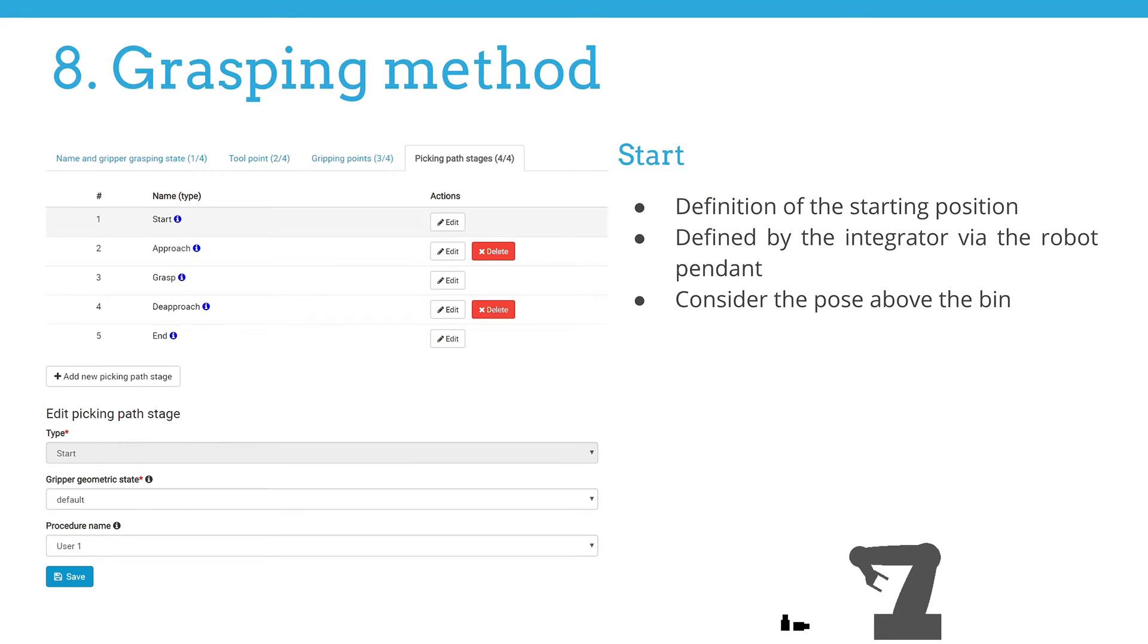The first action in the grasping stage is start. This step is mandatory. As you see from the name, this type defines the position from which the trajectory planning will be initiated. We want to keep this very simple, so the teaching of this point is done by a robotic pendant. The position is transferred to the vision controller in the very first procedure called up in the bin picking program. Consider the position above the bin so there are no unnecessary obstacles in the way down to the parts. The user may call a custom procedure by selecting the name in the procedure name drop-down box.